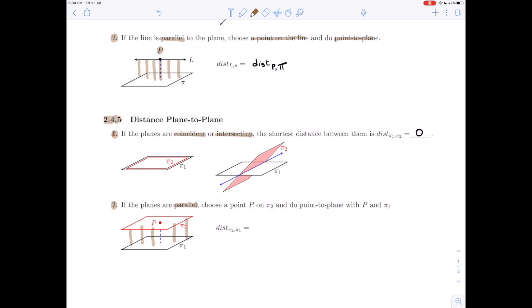And so you choose a point P; you get to choose any point that you want in the plane. So here I've said on π₂, but you could do it the other way around, and do point to plane. So the way I've written it, you're choosing P in π₂, and you're doing the distance from P down to π₁. So the distance between the planes is the distance from point P in π₂ down to π₁.